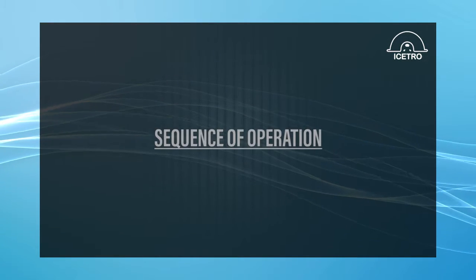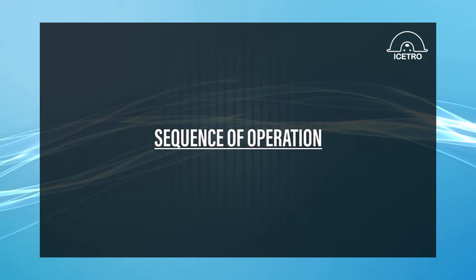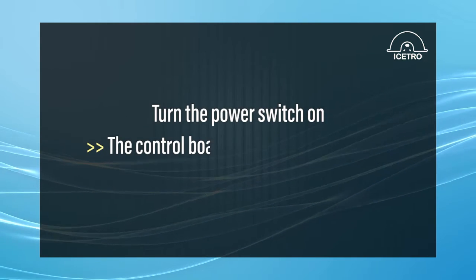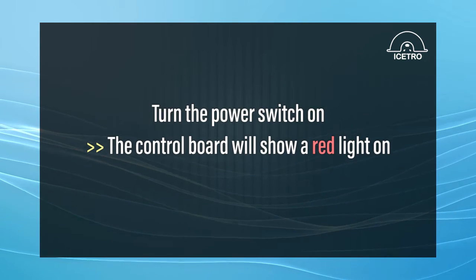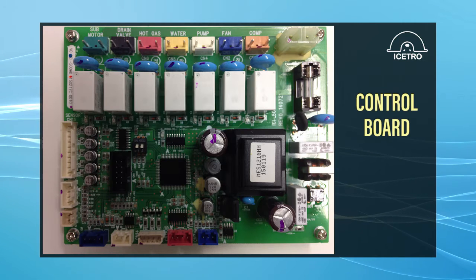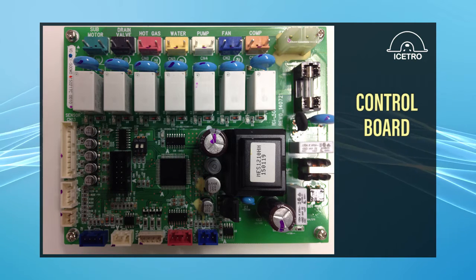Let's start the sequence of operation. Turn the power switch on to the machine. The control board will show a red light on which confirms the board has power to it. Then, turn the ice off clean switch to the ice position.